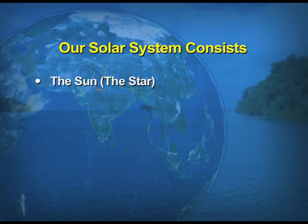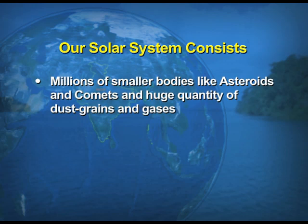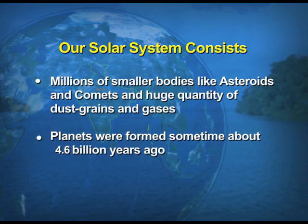When we talk about our solar system and what it consists of — it consists of the sun, eight planets, almost 63 moons, millions of small bodies like asteroids and comets, and huge quantities of dust, grains and gases. The planets were formed about 4.6 billion years ago.